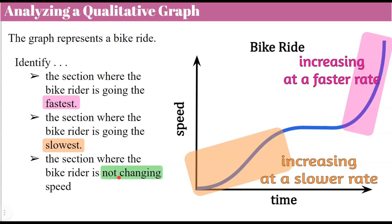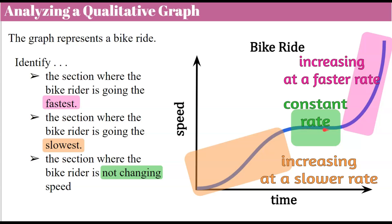The section that is not changing, where the speed remains constant, is right in here. We have a horizontal section — it's not completely straight, but it looks straight. It stops increasing for a period of time, and the bike is going at a constant speed.